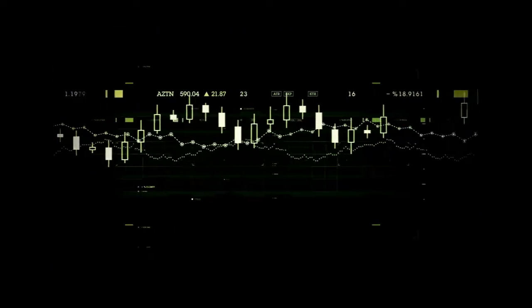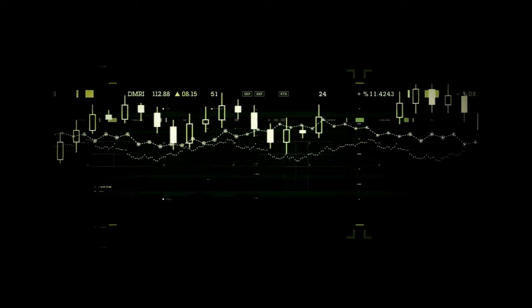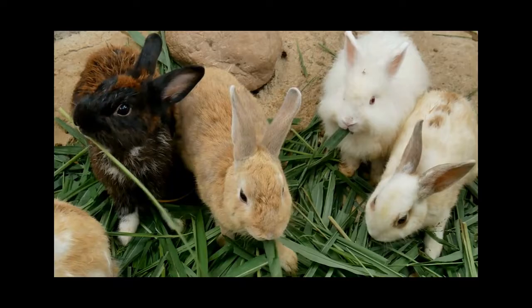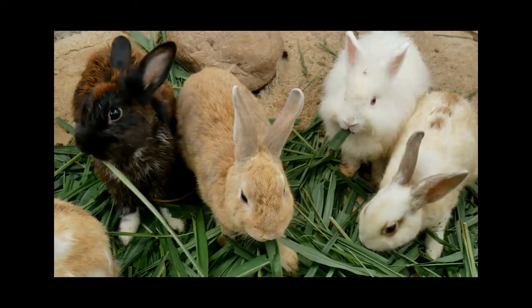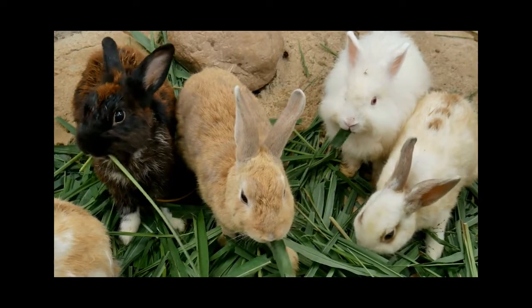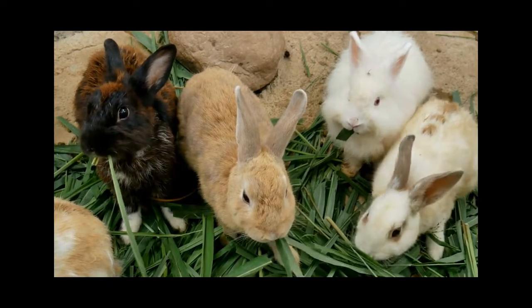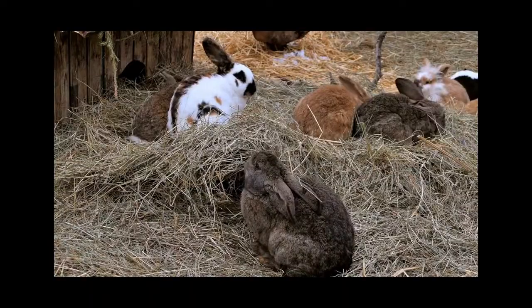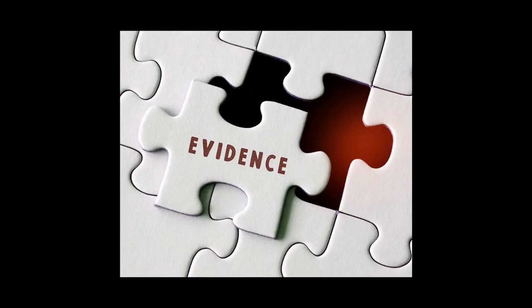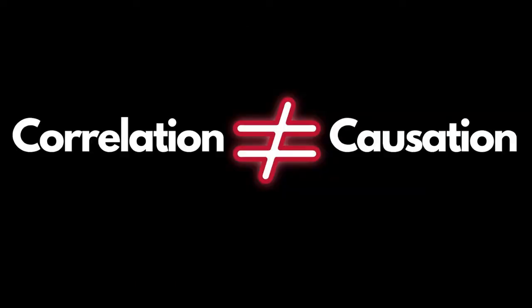Next comes the exciting part: analyzing the data. If our numbers show that the rabbit population thrives when there's plenty of food and water, but declines when resources are scarce, that supports our understanding that resource availability directly impacts organism populations in an ecosystem.